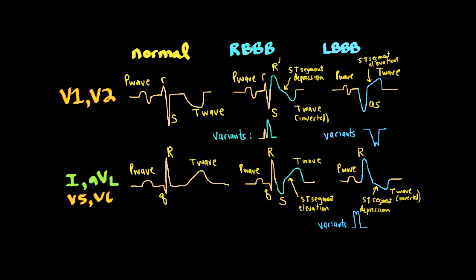It shouldn't be difficult to distinguish right from left bundle branch blocks in leads V1, V2, 1, AVL, V5, and V6. For right bundle branch block, the key abnormality is an extra wave at the end representing right ventricle depolarization that is unmasked — normally it occurs simultaneously with LV depolarization. For left bundle branch block, we lose septal forces and have prolonged LV free wall forces. That concludes this video on bundle branch blocks.